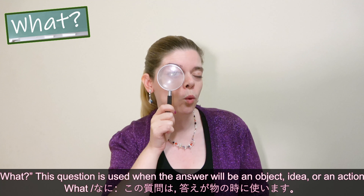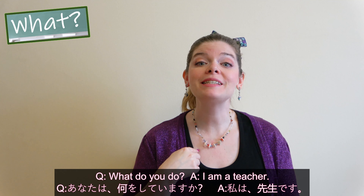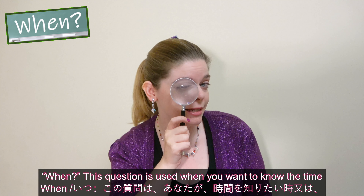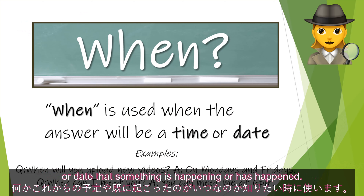Who. This question is used when the answer will be a person. Who are you? I'm Jen. What. This question is used when the answer will be an object, idea, or an action. What do you do? I'm a teacher.